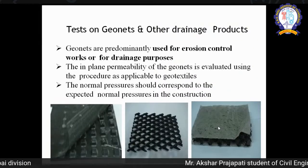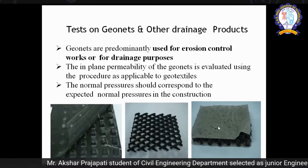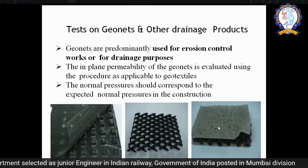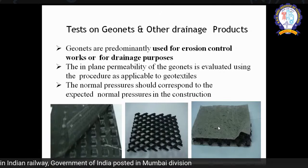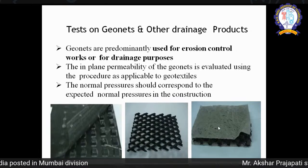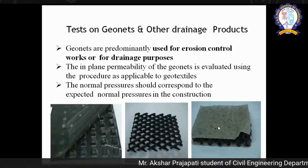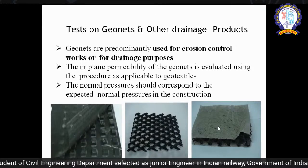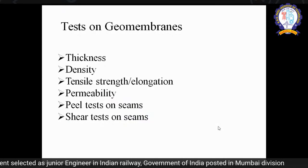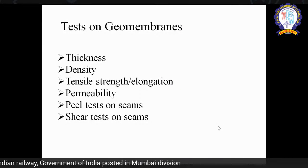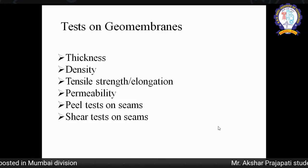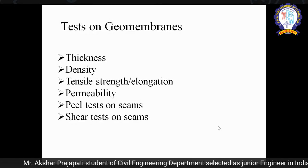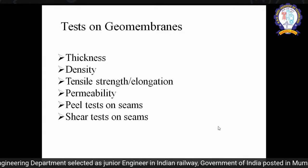In case of retaining walls or other places requiring proper drainage, geonet is used along with geotextile as a composite material. You can use a number of geosynthetic materials together to achieve better properties or better application at a site. These are basically used for erosion control or drainage purposes. For geomembranes, the basic tests to be conducted include thickness, density, tensile strength, and permeability.